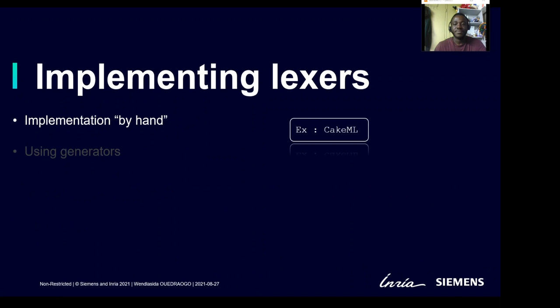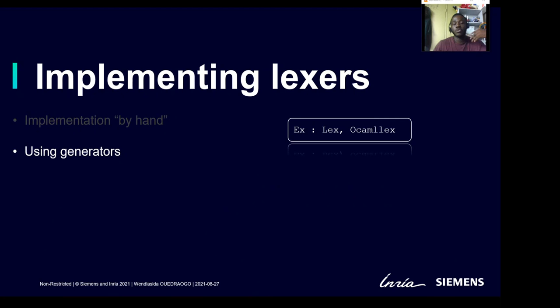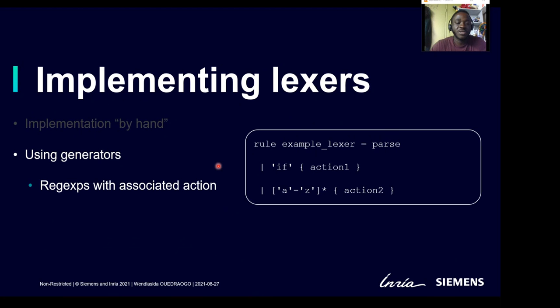To implement a Lexer, we can either do it by hand from scratch, as has been done in CakeML, or do what people usually do: use a Lexer generator like Lex or OCaml Lex. Generators use a particular description language to generate the Lexer. They use the concept of regular expressions associated with actions. Actions are arbitrary code and regular expressions are patterns used to choose which action will be executed.